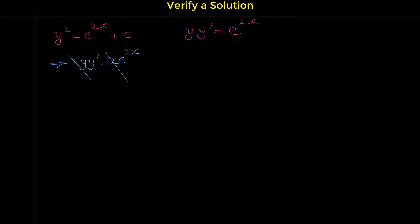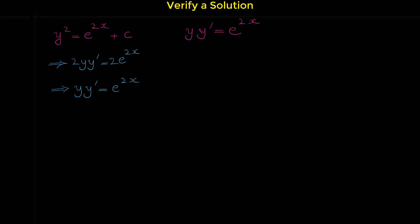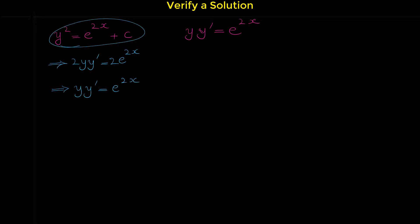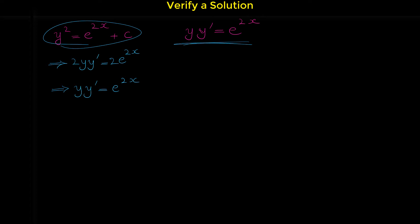If we cancel the 2s on both sides, we get yy prime equals e to the 2x. Comparing this with the given differential equation, you can see they are identical. So by just taking the derivative of this implicit relation, we showed that this function is a solution for the differential equation.